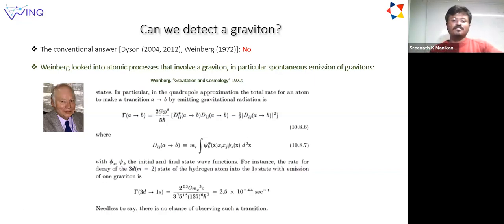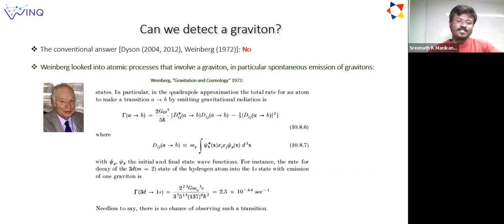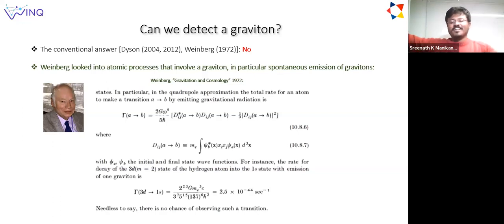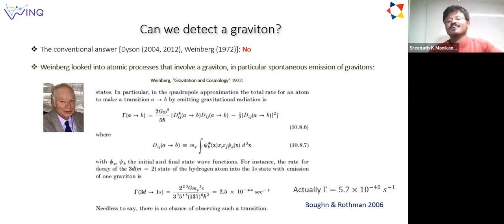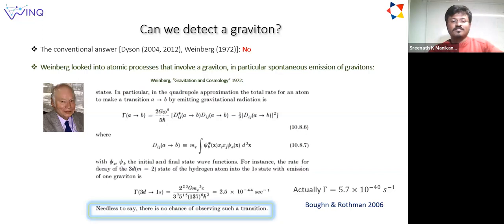Weinberg computes the rate of spontaneous emission from a hydrogen atom—specifically from the 3d2 level to the 1s level—and gets a number of 10 to the minus 44 per second. Comparing to the age of the universe, that's about 10 to the 14 billion years, so you need to wait quite a long time and it's impractical. Born and Rothman later did a more careful analysis of the same problem and found a four orders of magnitude improvement, but still Weinberg's conclusion holds: there is almost no chance of seeing a graviton spontaneously emitted from a hydrogen atom in feasible timescales.